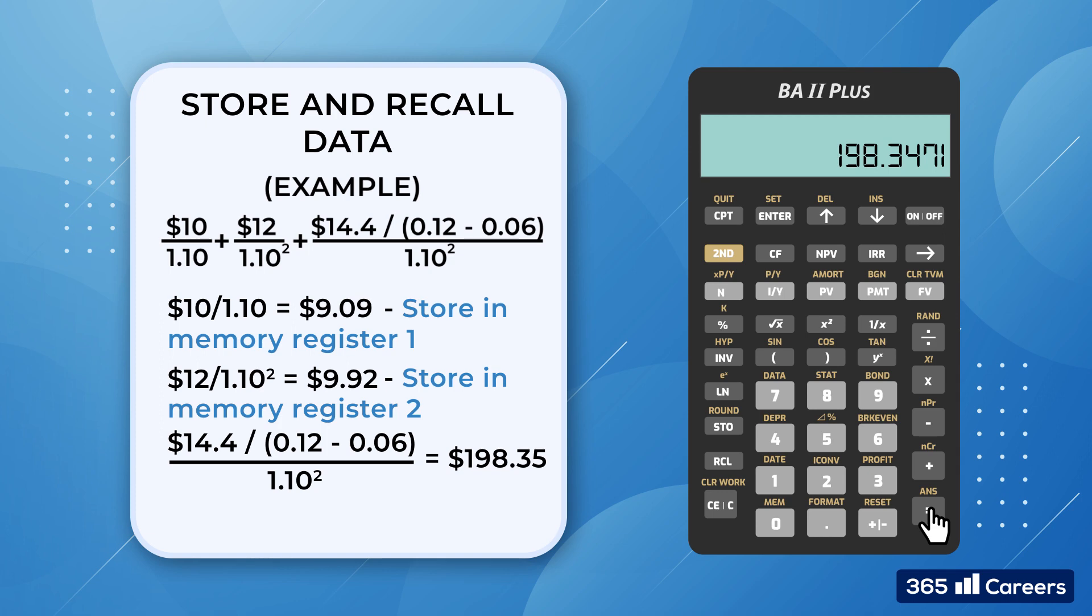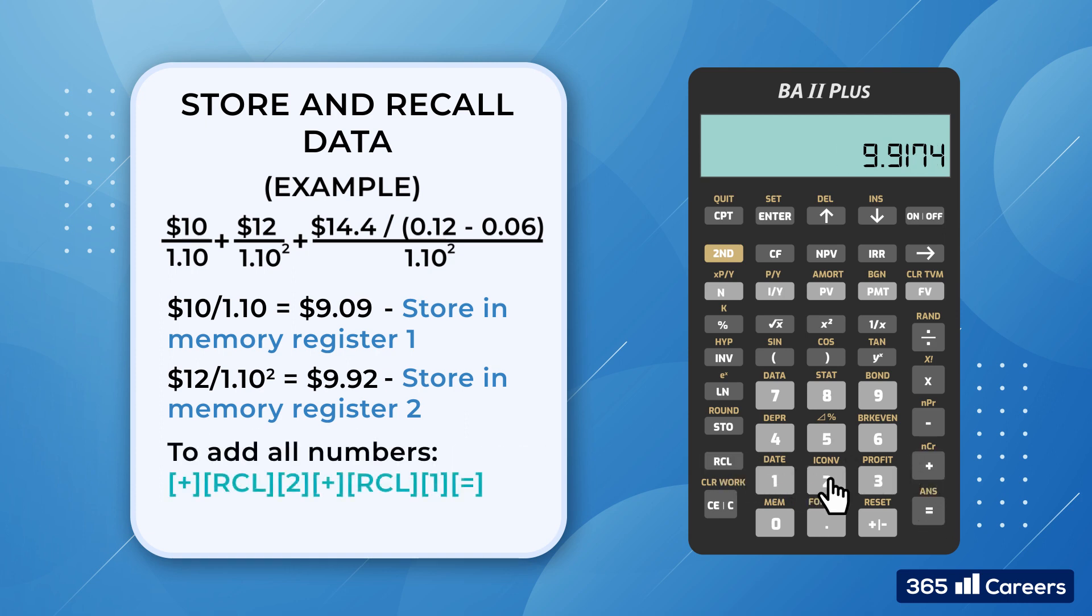The result is $198.35. The last piece of the puzzle is to add all numbers together. The Texas Instruments BA2 Plus allows us to do this easily. We press plus recall 2, plus recall 1, followed by equal to obtain $217.35.